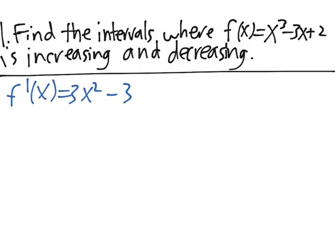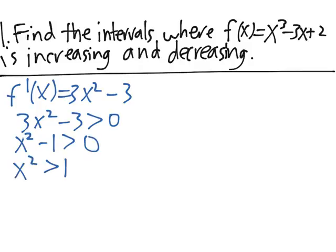To find out where f is increasing and decreasing, we need to know when f' is positive or negative. So it's increasing when 3x² - 3 is larger than 0. To solve this inequality, we can divide both sides by 3 to get x² - 1 is larger than 0, or x² is greater than 1. And this happens whenever x is greater than 1 or x is less than -1.